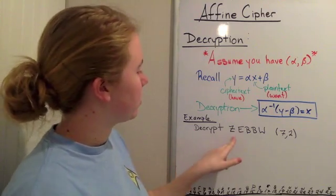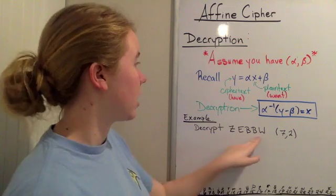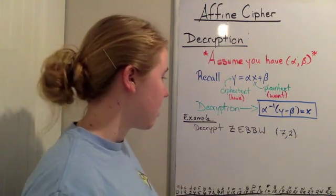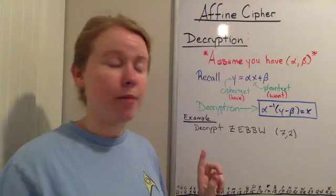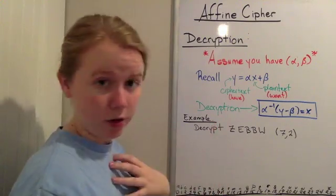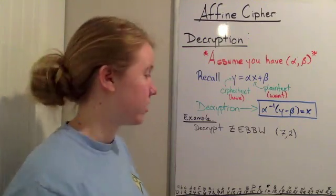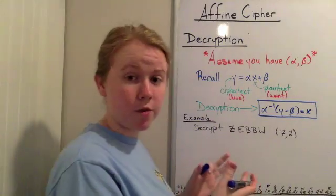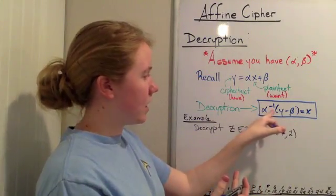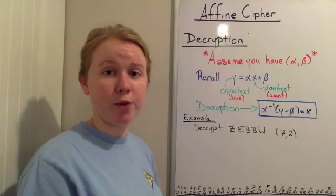So we want to decrypt this. This is our ciphertext. Notice I wrote in all caps to prove that it's ciphertext for my own clarification, and this is our key that I was given. So first thing we want to do is we want to fill in this formula with the numbers we have.